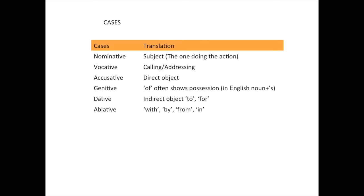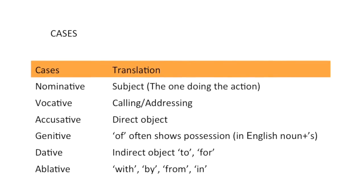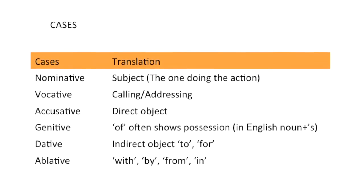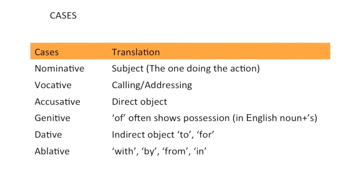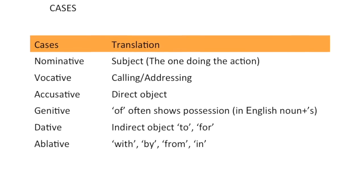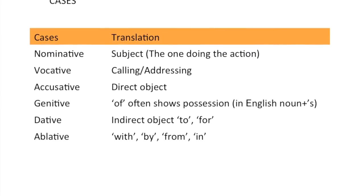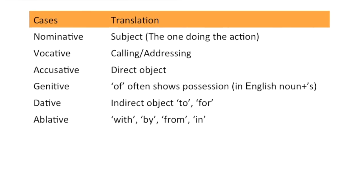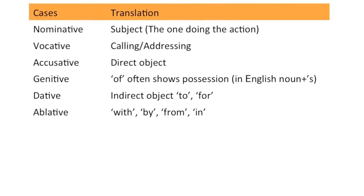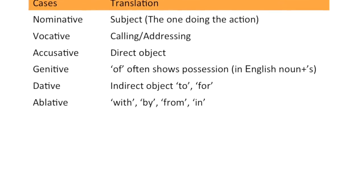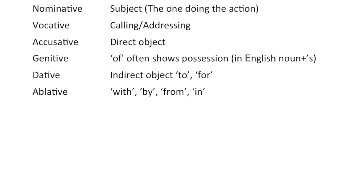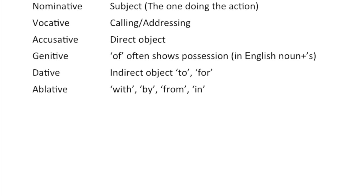Let's review all of this. The nominative case is the subject — the one doing the action. The vocative case is calling or addressing — the one being called or addressed. The accusative case is the direct object, the one directly receiving the action. The genitive case in English is often written with an apostrophe S, but it can be translated as 'of' and shows possession. The dative case is the indirect object and means 'to' or 'for.' The ablative case has a few translations: 'with,' 'by,' 'from,' and 'in.'